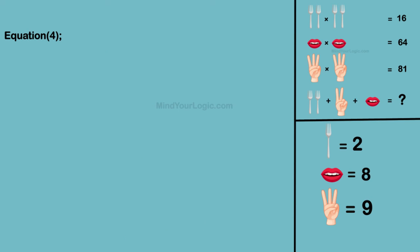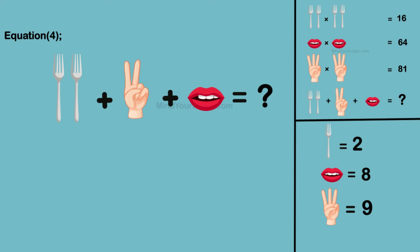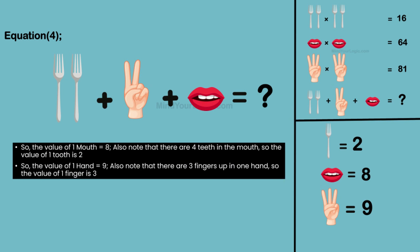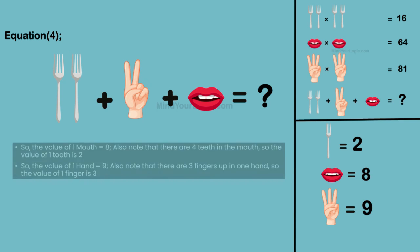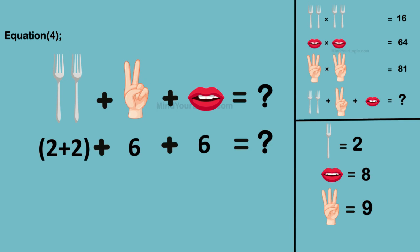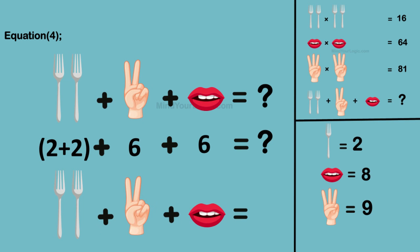Moving to the final equation: 2 fork plus hand with 2 fingers plus mouth with 3 teeth equals question mark. Substituting the values, we get the value of the final equation as 16.